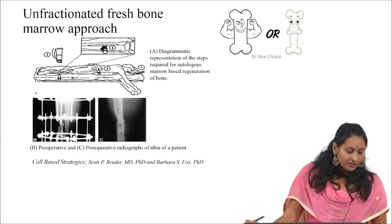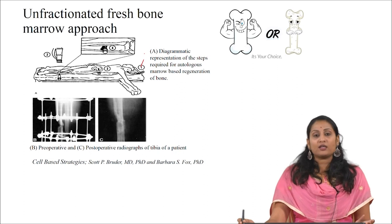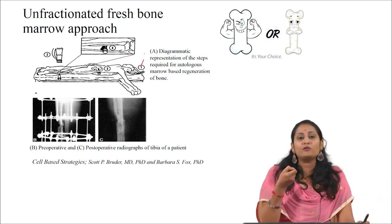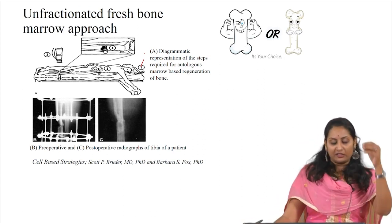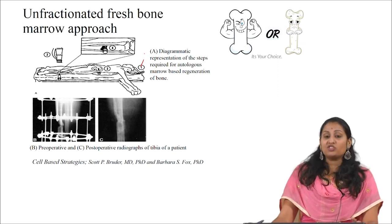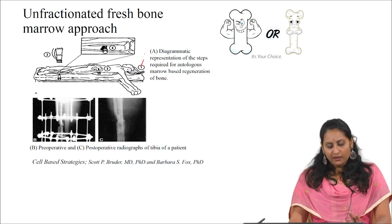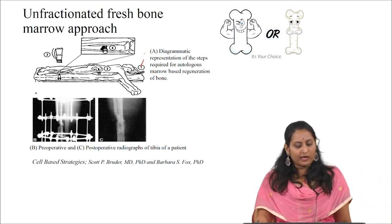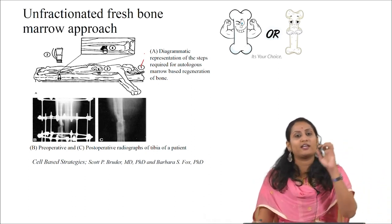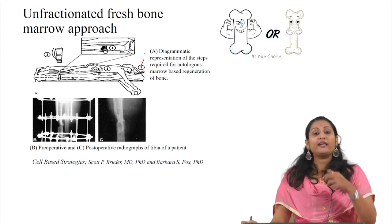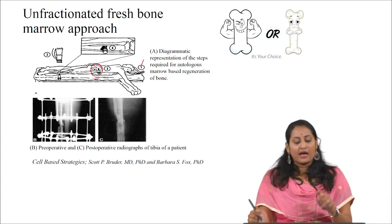The first approach is the unfractionated fresh bone marrow approach. The patient is anesthetized, the defect is identified, and fresh bone marrow is directly removed and injected with some matrix into the defective site. All we know that cells present in the bone marrow region — they remove cells from the bone marrow and inject them directly along with a matrix. After a few months, radiograph images show complete healing of the bone defect. We can see in pictures B and C complete healing of the bone defect due to injection of osteogenic bone marrow cells directly from the posterior wing of the iliac crest into the defect site.